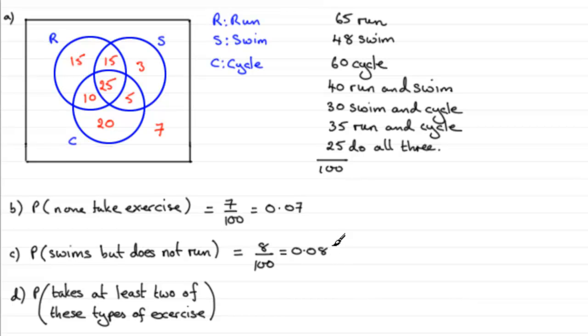So the last part here, D, the probability that in this random sample someone takes at least two types of exercise. Okay, so let's have a look at how many people take at least two sets of exercise.